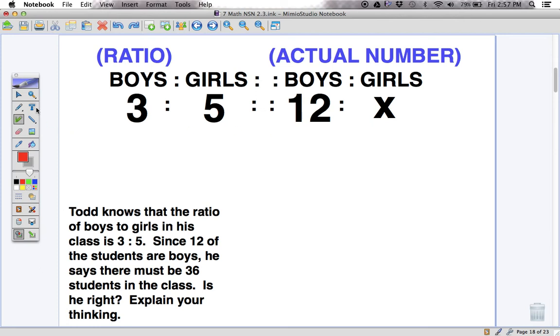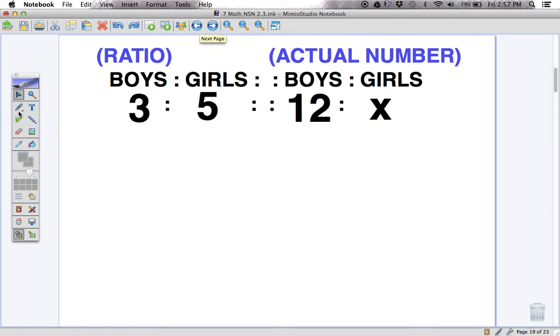So there's a couple ways to solve this. We're trying to find x, the actual number. One of the ways we can do it is we can ask ourselves, well, we're starting at 3 and we ended up at 12. And how do we get there? And it's always multiplication or division, so we're doing times 4. What that means is we can do the same thing with 5. If we multiply 5 by 4, we will get 20. And in that case, we will have 12 boys and 20 girls.